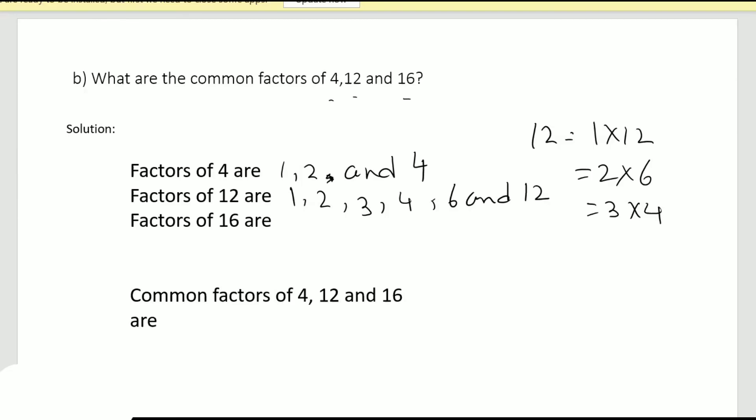And for factors of 16, again I'll do a little bit of rough work. So it's one times 16, two times eight, four times four, okay. So the number is repeated, so I shall stop here: 1, 2, 4, 8, and 16. Now let's see which are the common factors. One is common, it's there in all three. Two is common in all three, it's there, right? And four is also common, we can see four, four, four, right? So common factors of 4, 12, and 16 are 1, 2, and 4.